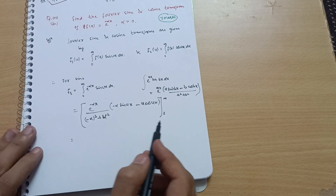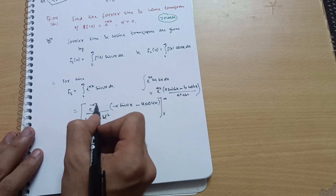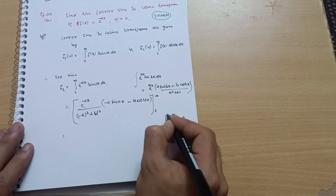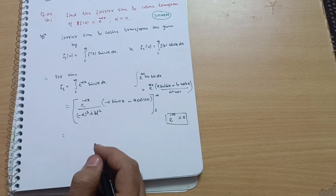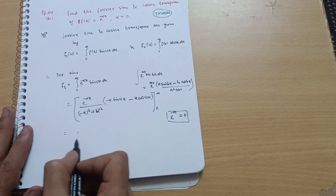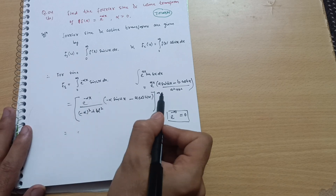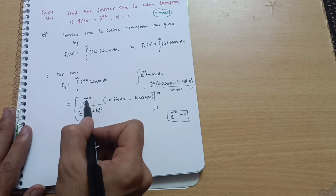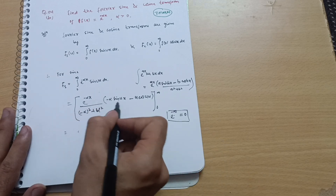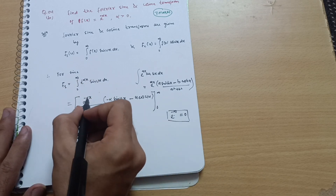Now apply the upper limit minus the lower limit. When you apply the upper limit, e^(−α·∞) becomes e^(−∞), which is always zero. So zero multiplied by or divided by anything is zero, meaning the entire upper limit term becomes zero.